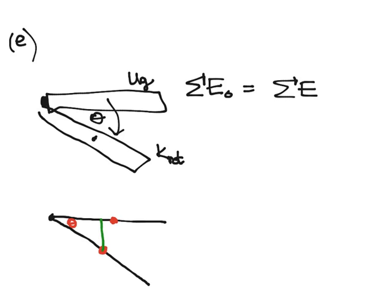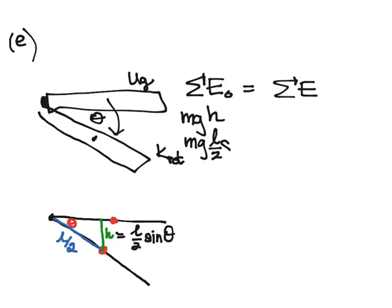So we know the center of mass is at halfway through the rod. So we know this line right here that I'm highlighting in blue is going to be equal to L over 2. So our height will be equal to L over 2 sine of our angle. So I'm going to put that in at the beginning. I know MGH can be replaced by MG L over 2 sine theta.